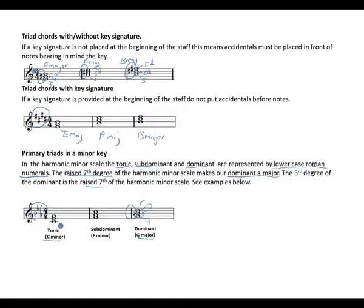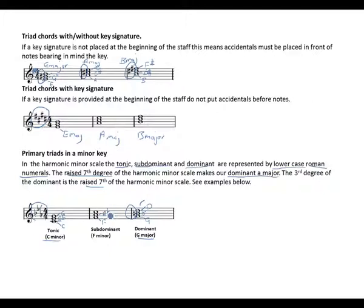The tonic is C minor — C, E flat, and G. The flat third makes our tonic a minor chord. The subdominant, which is the fourth degree, is F: F as the root, A flat as the mediant, and C as the dominant — giving us F minor. Lastly, the dominant is G major. Our dominant in the harmonic minor scale is a major chord because of the raised seventh degree.